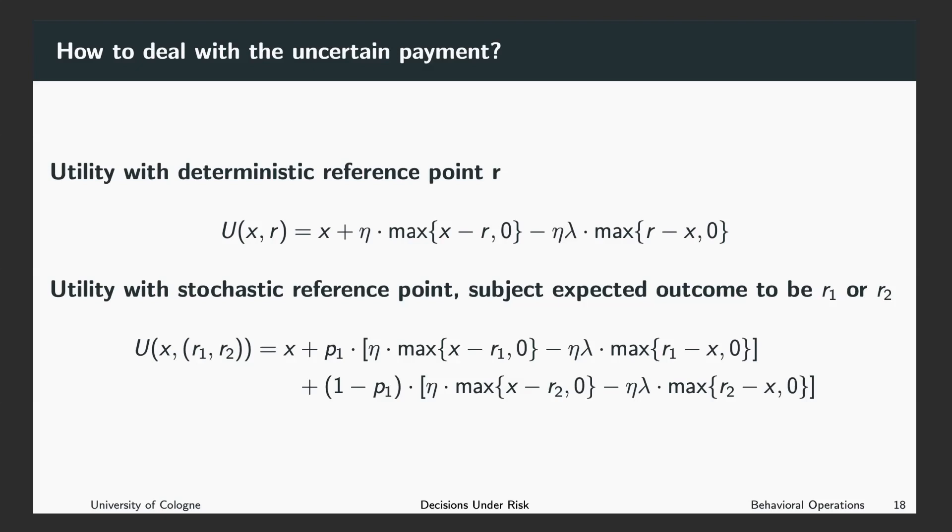And you expected the payment to be r₂ with probability 1 minus p₁. The rest is just the same as in the setting with a deterministic reference point.